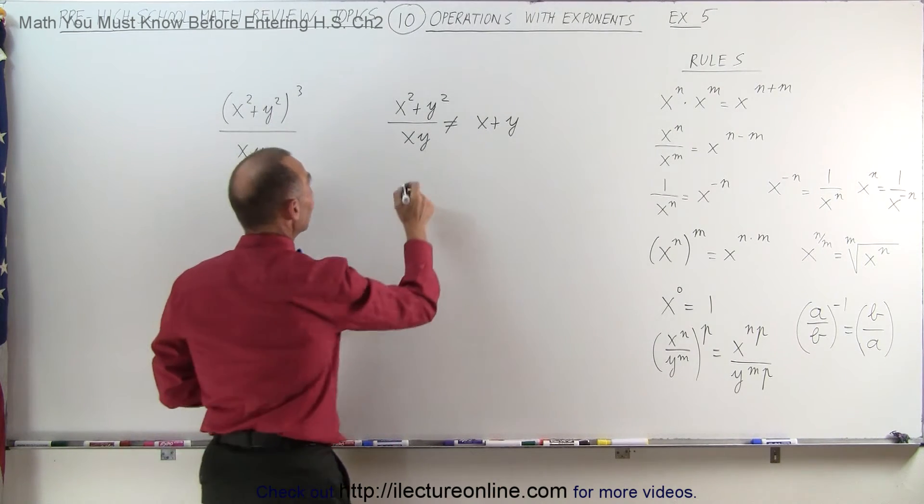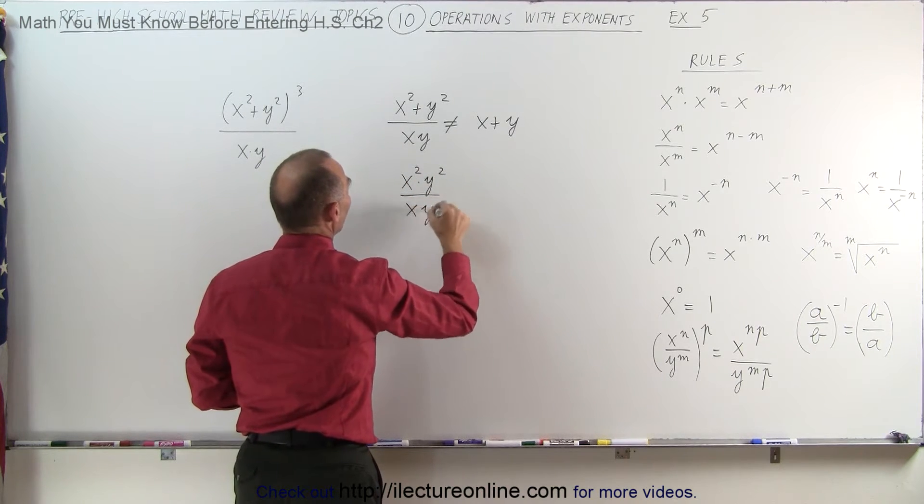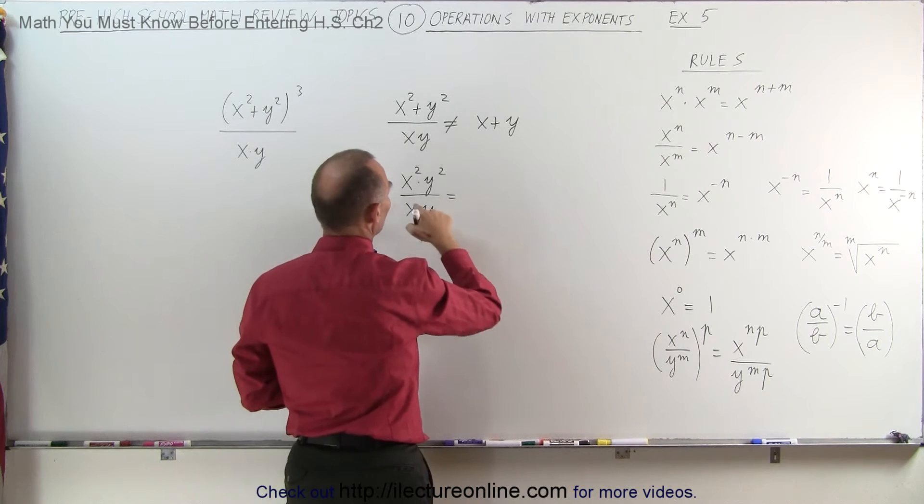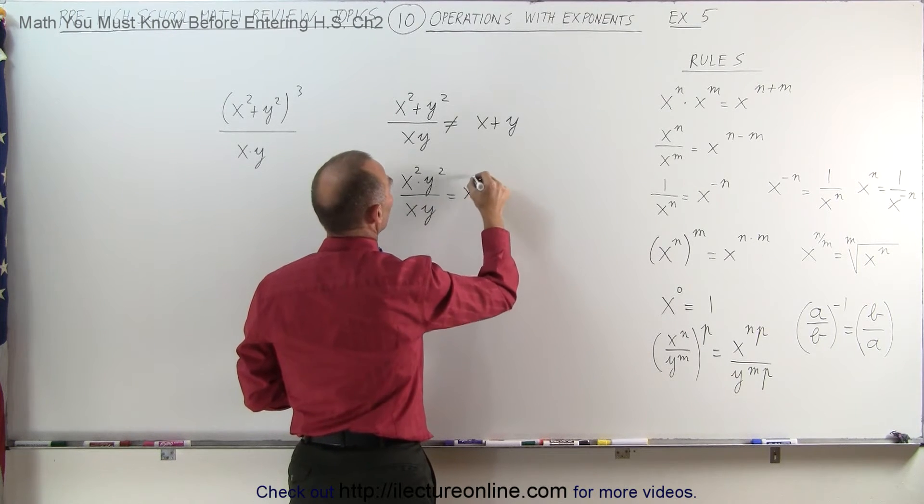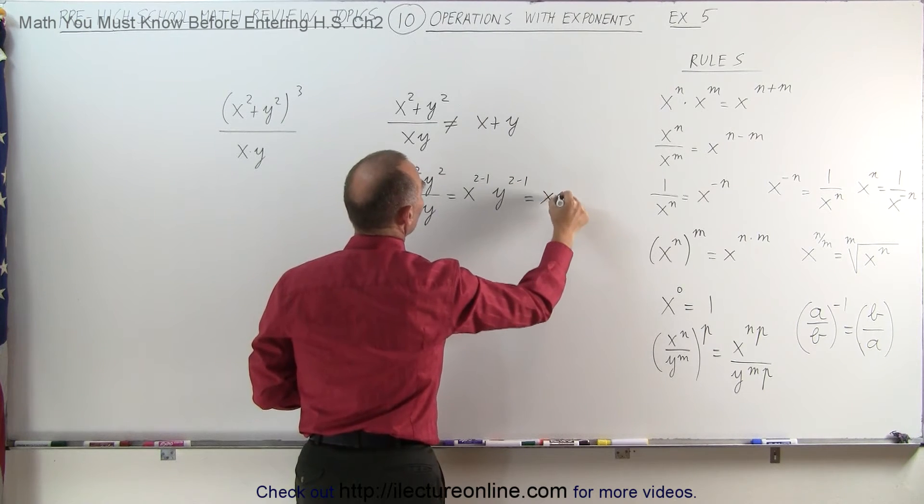However, if we had this instead, x squared times y squared divided by x times y, this would be equal to, since this is to the first power, x to the 2 minus 1 times y to the 2 minus 1, which would be simply x times y.